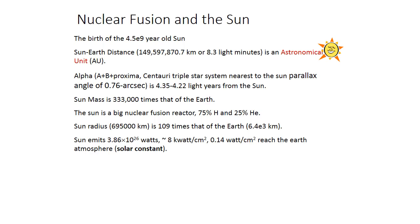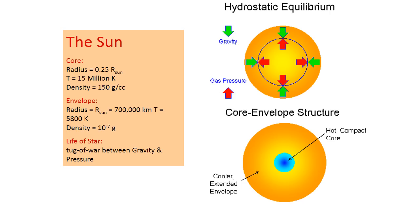The sun is 75% hydrogen and 25% helium, with a radius of 695,000 km — 109 times that of the Earth. The sun emits 3.86 × 10²⁶ watts, with approximately 8 W/cm² at the surface and 0.14 W/cm² reaching Earth's atmosphere — the solar constant. The sun's core has radius 0.25 R☉, temperature 15 million K, and density 150 g/cc; the envelope radius is 700,000 km at 5,800 K.